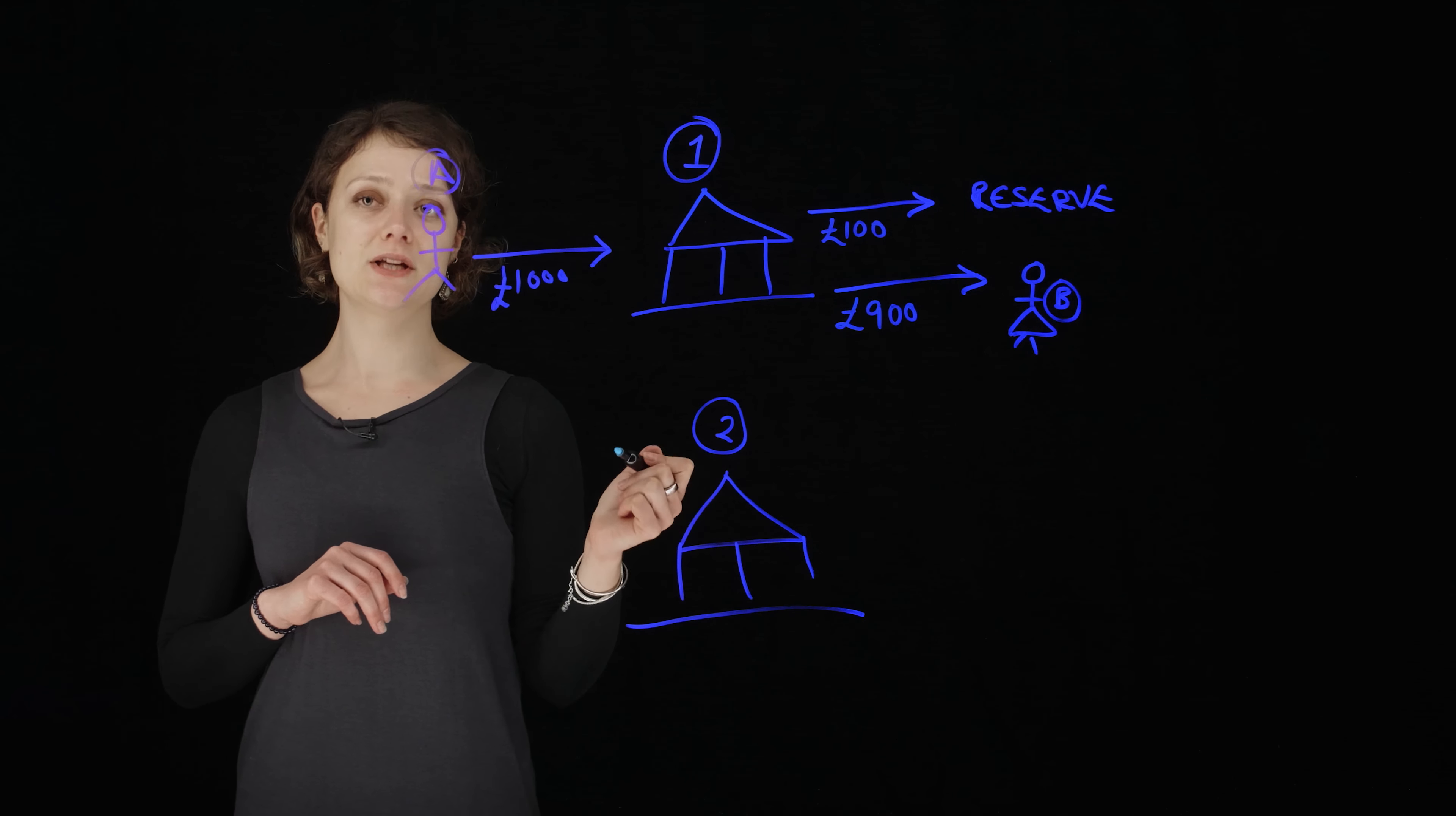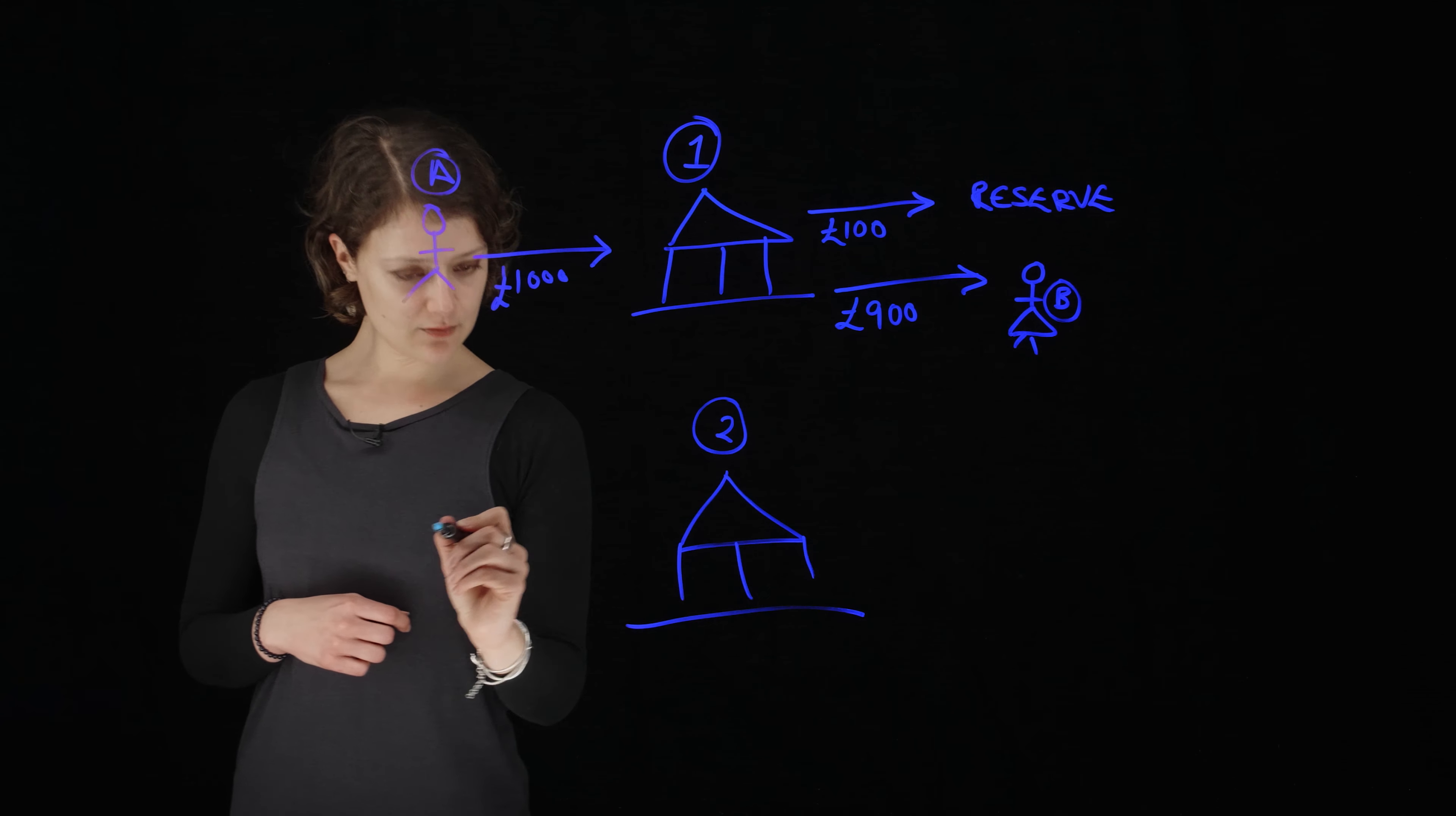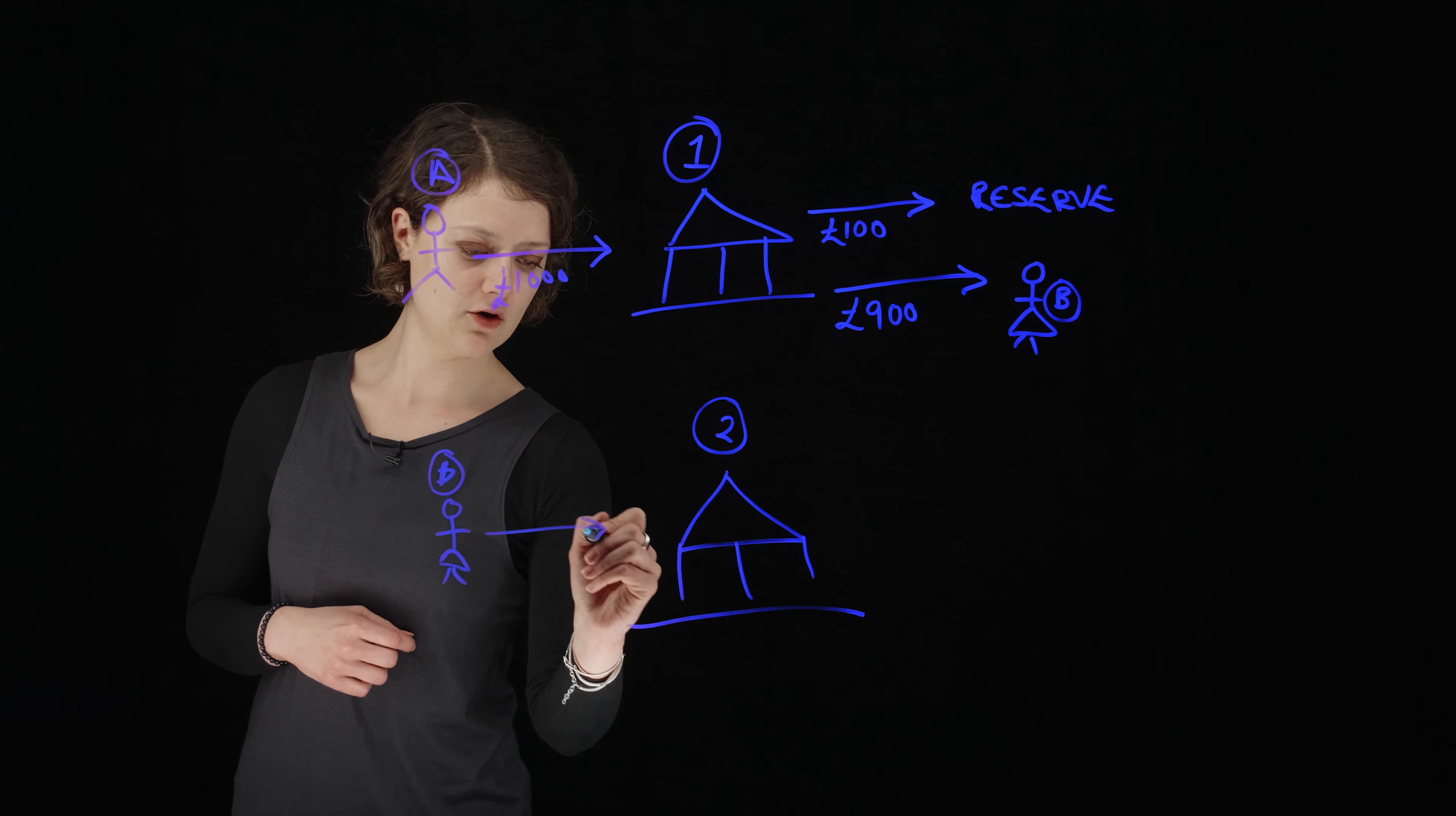But you might have spotted that nobody's actually making any money on this yet. Well, that comes in in the next bit. So person B is going to go down and they're going to put their money in their own bank down here. They're going to pay that 900 pounds in.